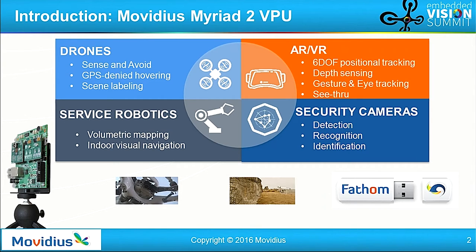At Movidius, we develop intelligence for the edge. What we care about most is three factors: power, performance, and footprint. We target any application where these factors matter — from drones to augmented reality, to service robots, security, internet of things, or any other application.